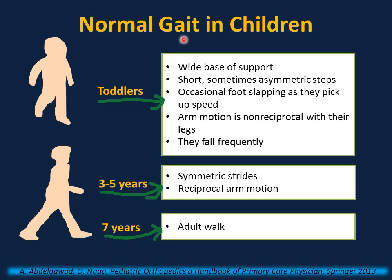In order to assess a child with limping, we need to know the normal gait patterns and variations in children according to age. In toddlers, normally they have poor balance and immature motor planning. So when they walk, they have a wide base of support, short and sometimes asymmetric steps, and occasional foot slapping as they pick up speed.